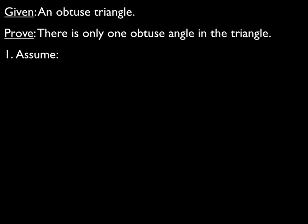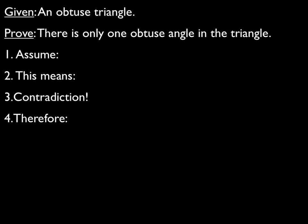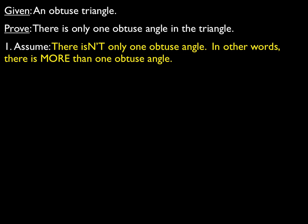Remember our four steps. We first assume the opposite of what we're trying to prove. We show that this leads to some type of contradiction, either given information or established fact, then point out the contradiction, and conclude the opposite of our assumption. So first, we assume the opposite of what we're trying to prove: assume there is not only one obtuse angle — in other words, we assume there's more than one obtuse angle.